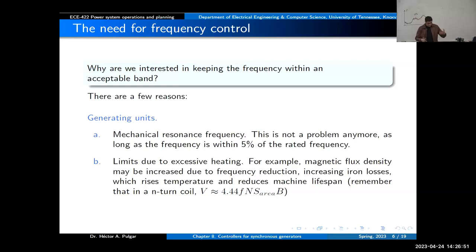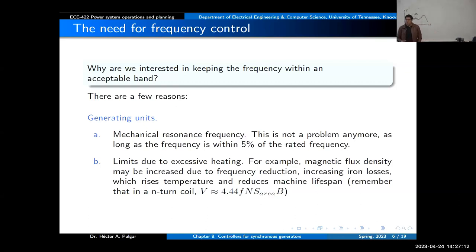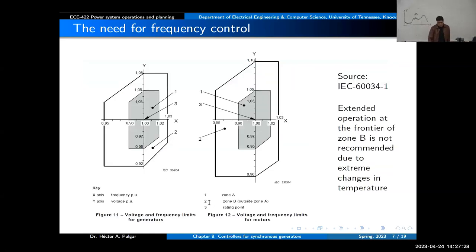The flux increases. And if the flux increases, you might have more losses and heat. Your components — transformer, machine — will heat up, and you will have losses. Here you have a norm that defines the typical range of operation for a generator and a motor. The x-axis is frequency, and the y-axis is voltage. There are different regions of operation: Zone A and Zone B. Certainly the inner region is a safer operating region — if you're in that area, you should be fine in terms of heating. If you move out of that area, it can be more dangerous and can lead to problems.